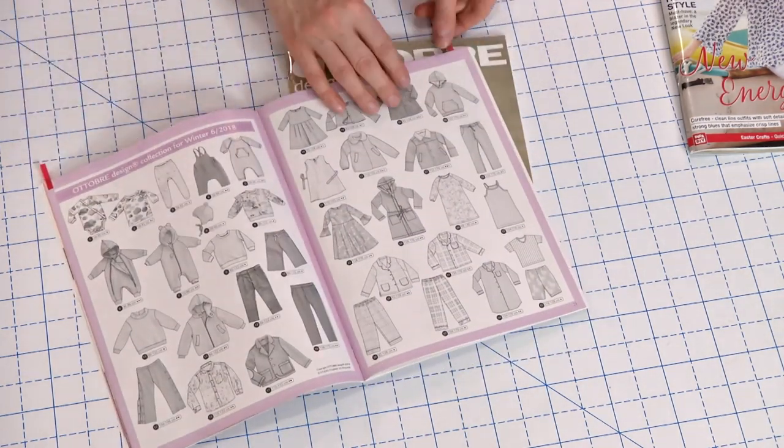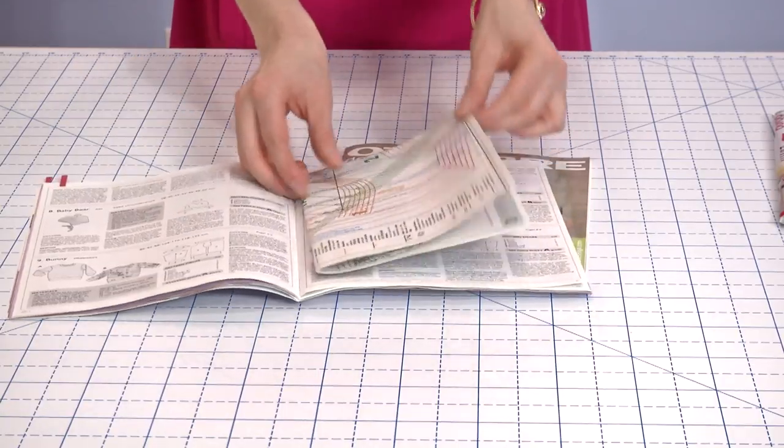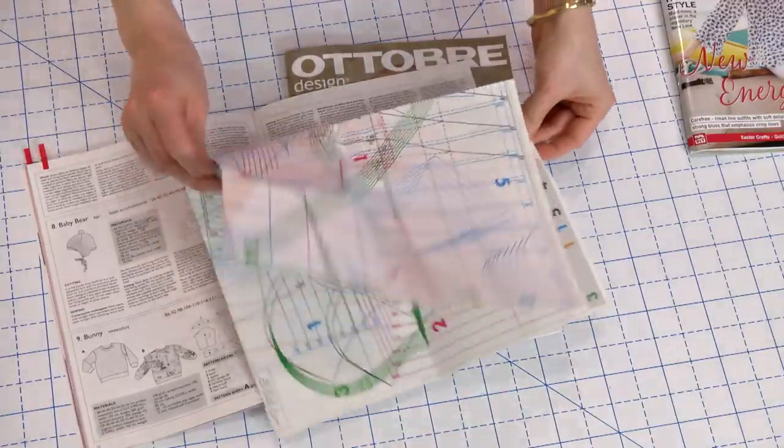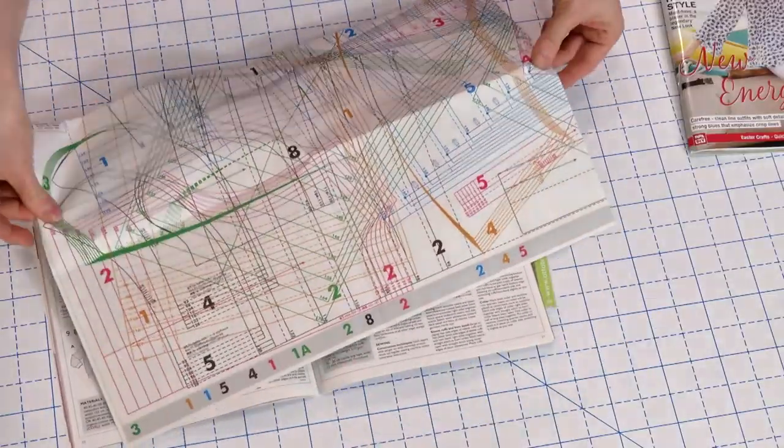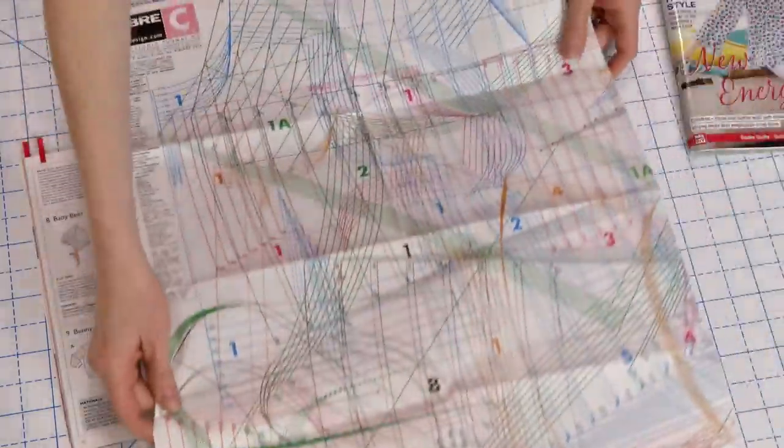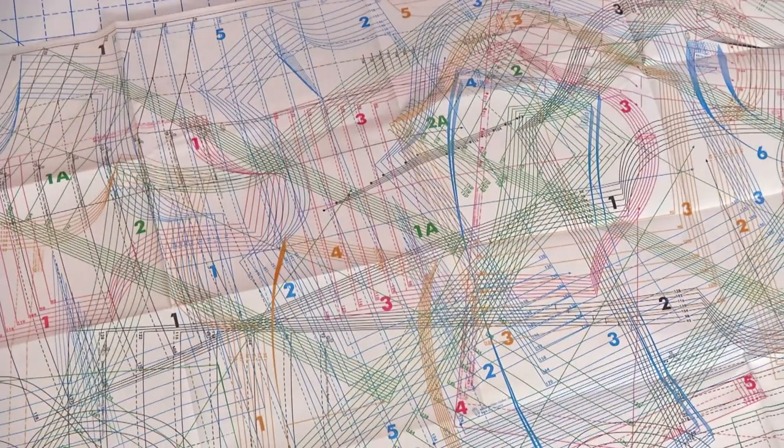Since the patterns are so numerous, they overlap on the pullout pattern sheets. These sheets can look like a bird's nest of crazy colored lines. I can show you some simple tools and methods that make tracing a magazine sewing pattern faster and easier.